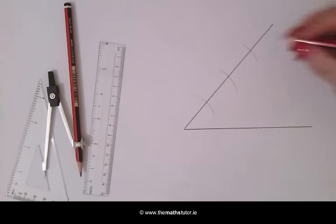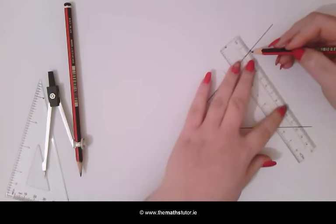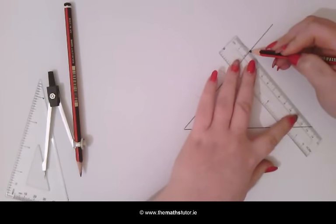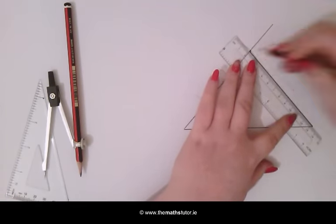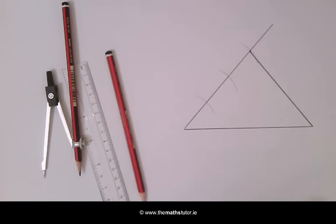We then join this last arc to the end of our given line. Taking our set square, we now line it up with this line here.